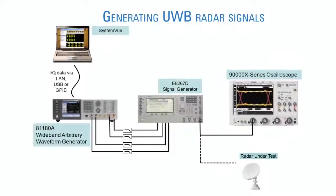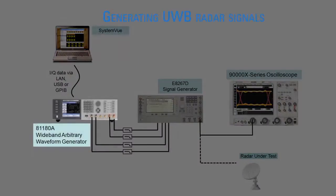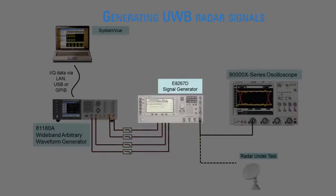Shown here is a test setup for generating UWB radar signals. Different UWB waveforms are generated in SystemVue, which are then downloaded to the Agilent 81180A wideband arbitrary waveform generator. The output differential IQ signals of the arbitrary waveform generator are modulated by the Agilent E8267D PSG vector signal generator to create an X, Ku, or Ka band signal.